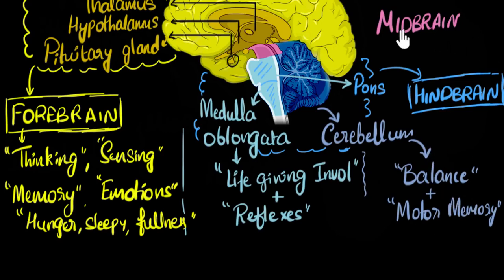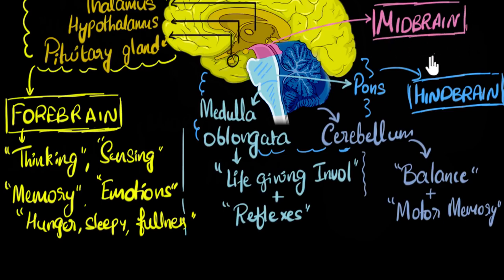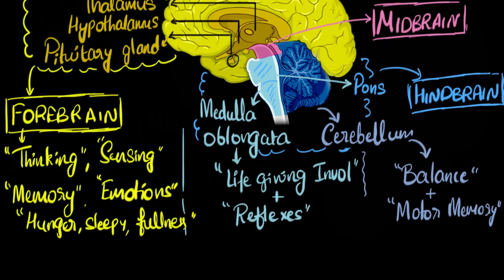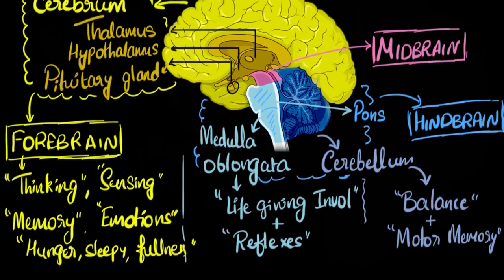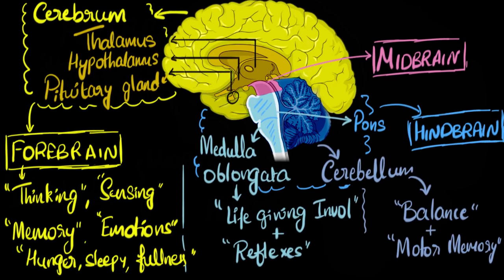What about the midbrain? We're not going to look at its individual parts. The midbrain also controls some involuntary functions — for example, when you shine light in your eyes, your pupils become smaller, and that is controlled by your midbrain. This is pretty much it. Since this screen contains the entire summary, try pausing the video and see if you can recall all the parts and their functions without looking.